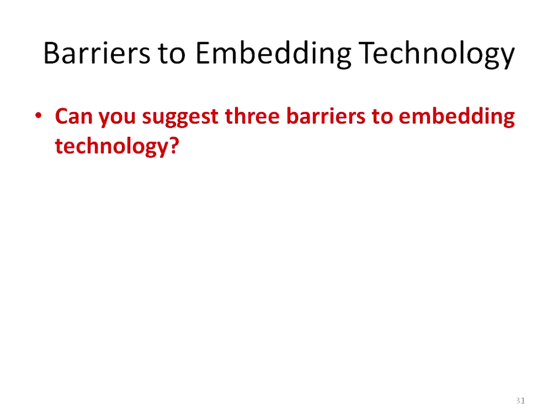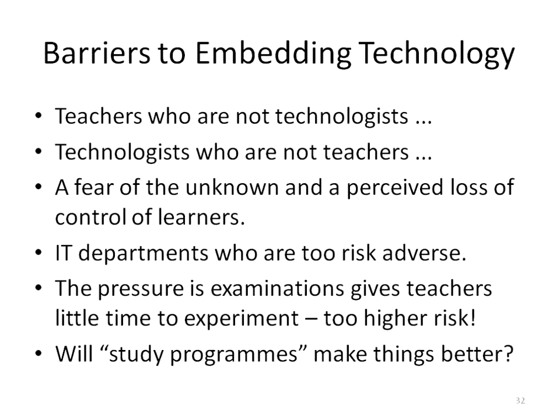What are the three barriers you identify in your institutions to embedding technology? I see: staff confidence, cultural resistance, cost, lack of imagination, managers, time, staff capacity, clinging to the traditional, fear. And when I observe teaching and learning as an Ofsted inspector, how often do I see a teacher who is very risk-averse? How often do I have a conversation where someone says: you've just seen my best teacher — but today they weren't because they were scared of doing it in front of an Ofsted inspector. We do need to develop confidence in our staff. The barriers to embedding technology: teachers who are not technologists, but also technologists who are not teachers, which can be a problem in terms of how technologists make it accessible. Fear of the unknown, loss of control, IT departments that are too risk-averse, and work pressures.